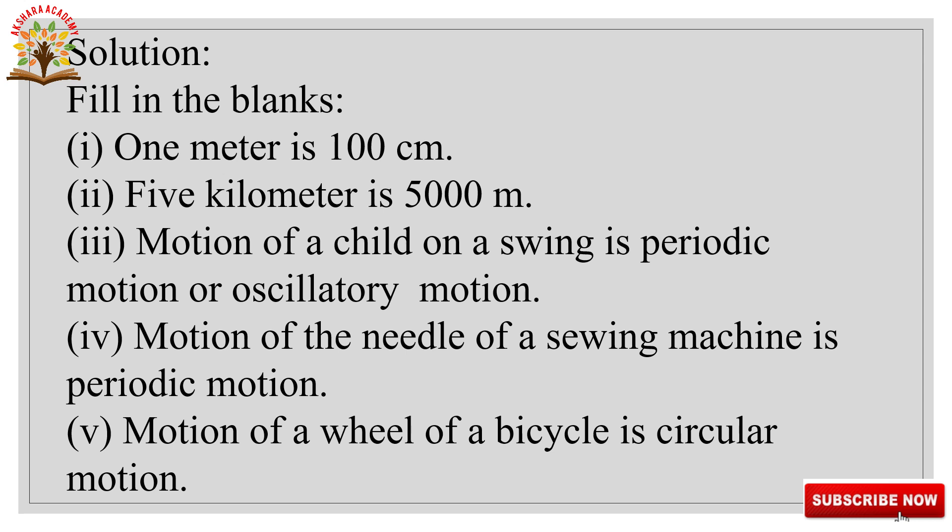To recap: 1 meter is 100 centimeters. 5 kilometers is 5000 meters, because 1 kilometer equals 1000 meters. Motion of a child on a swing is either periodic motion or oscillatory motion. Motion of the needle of a sieving machine is periodic motion.